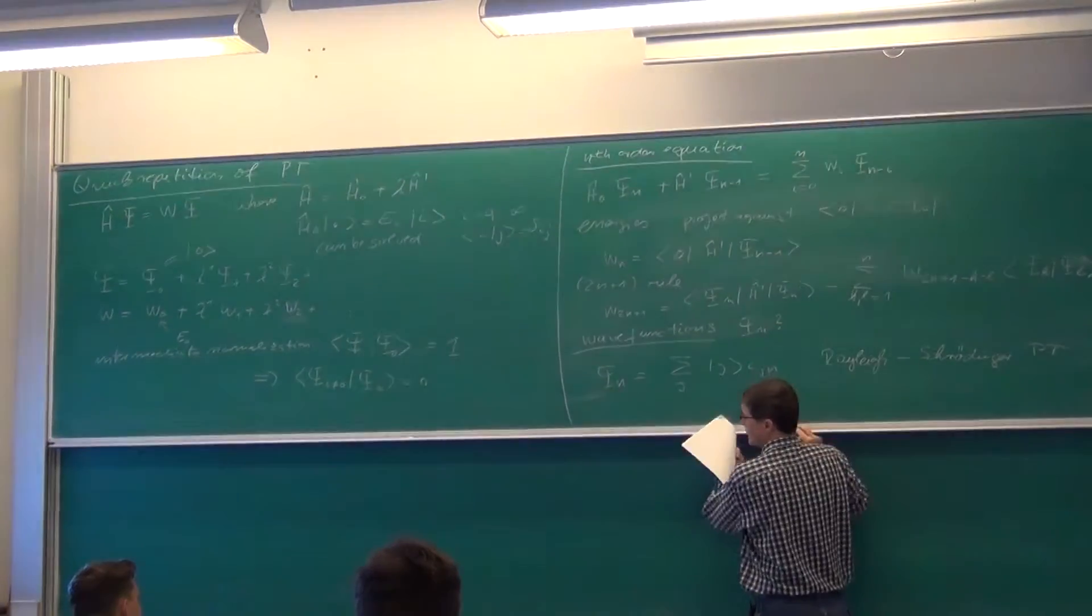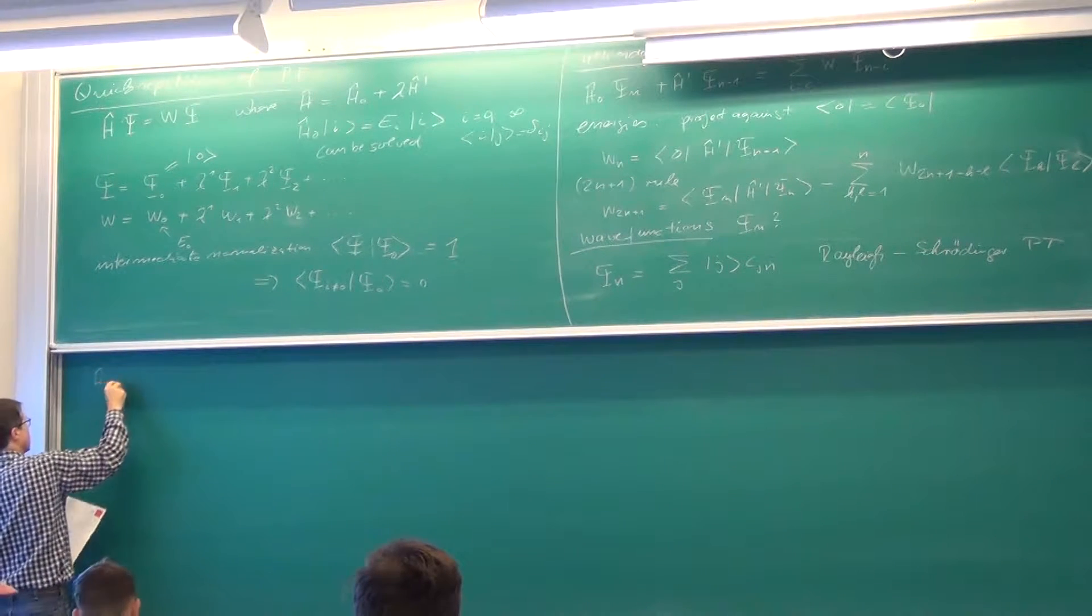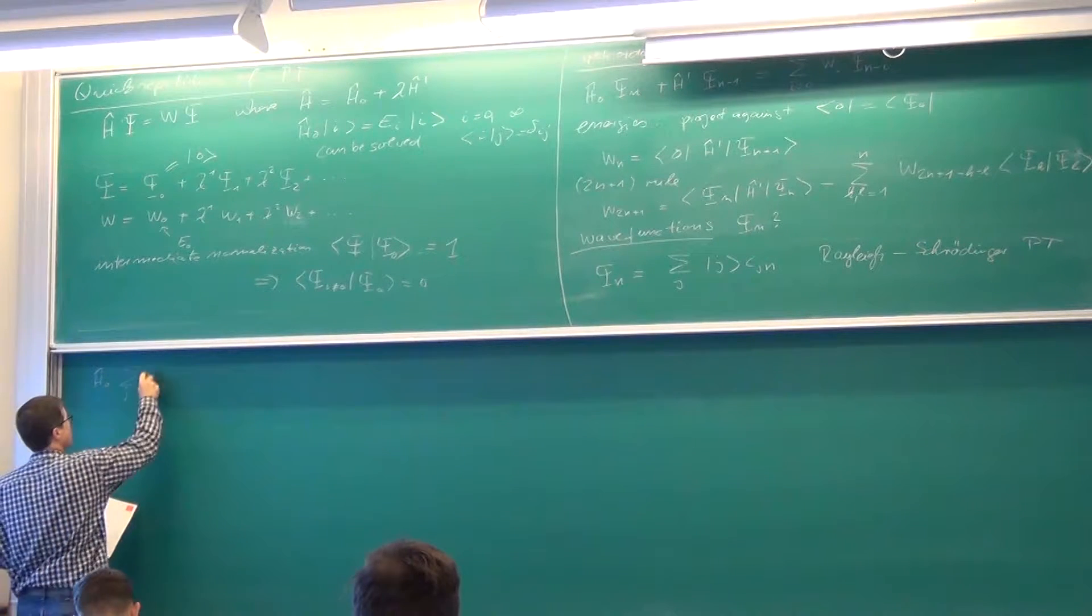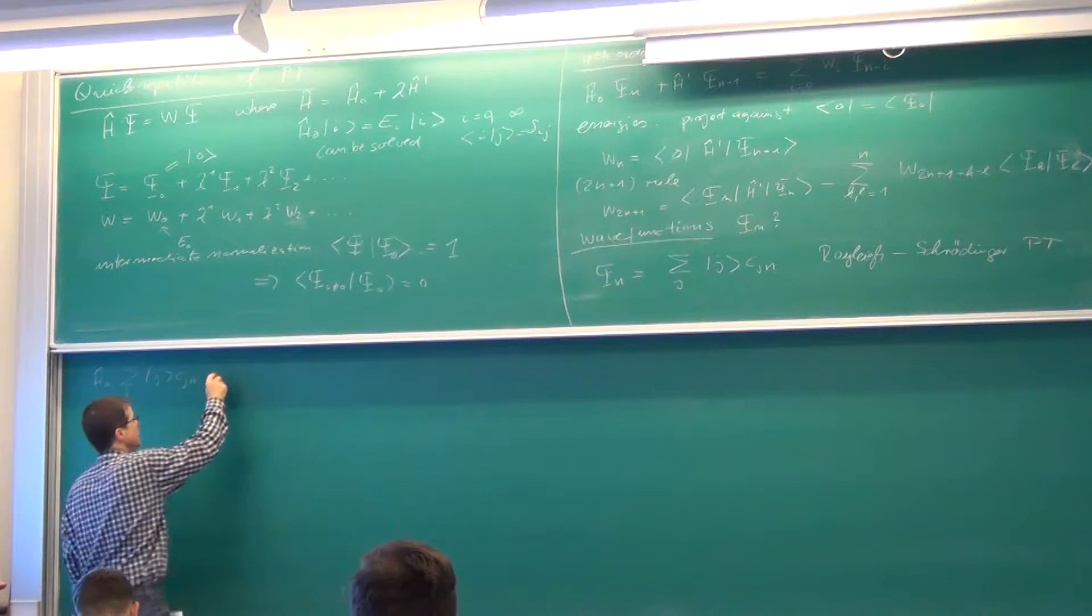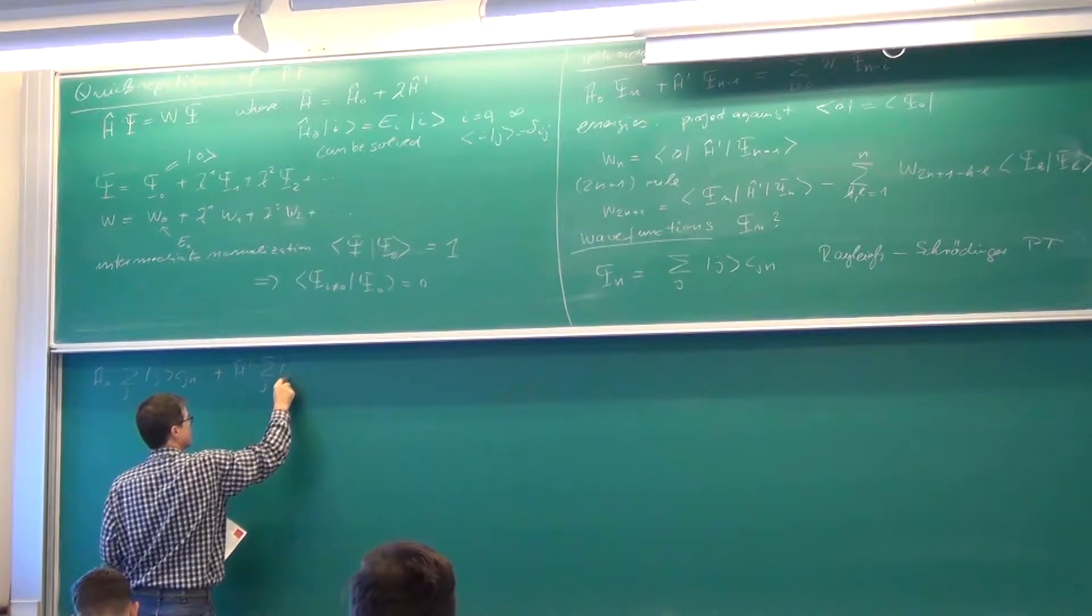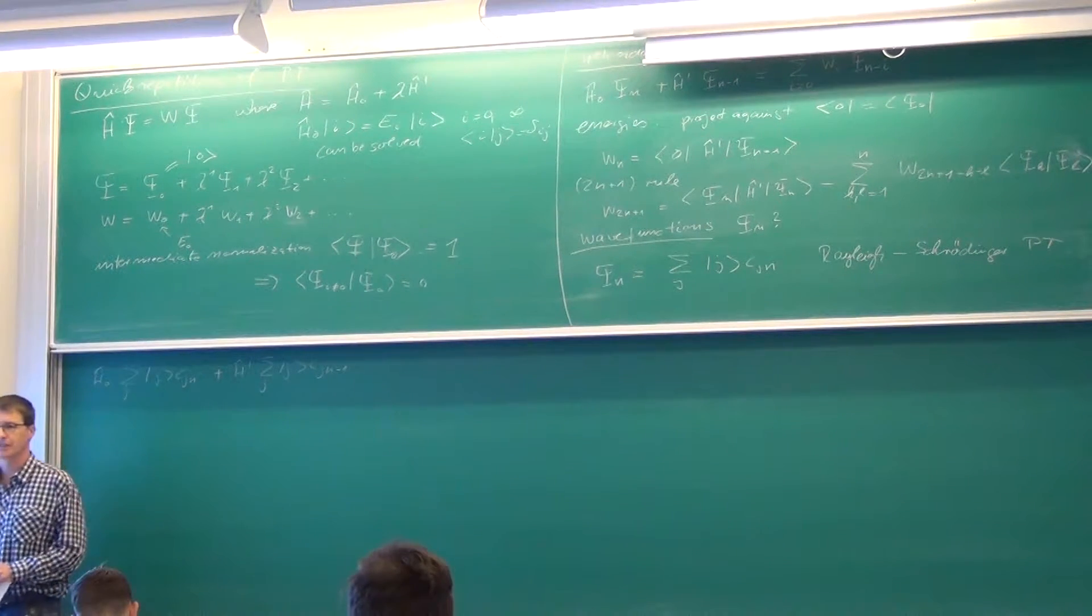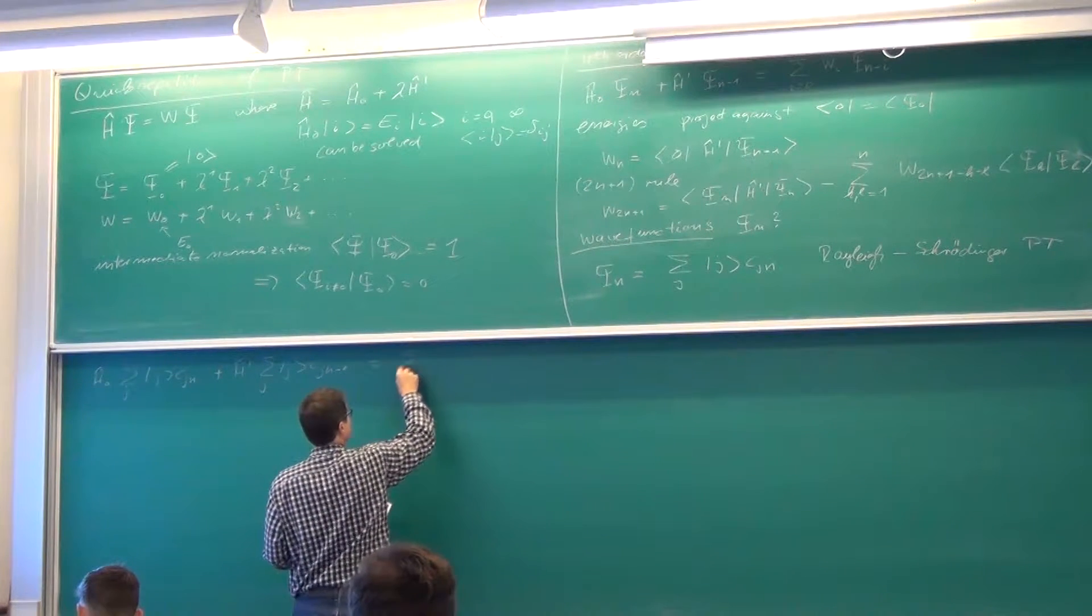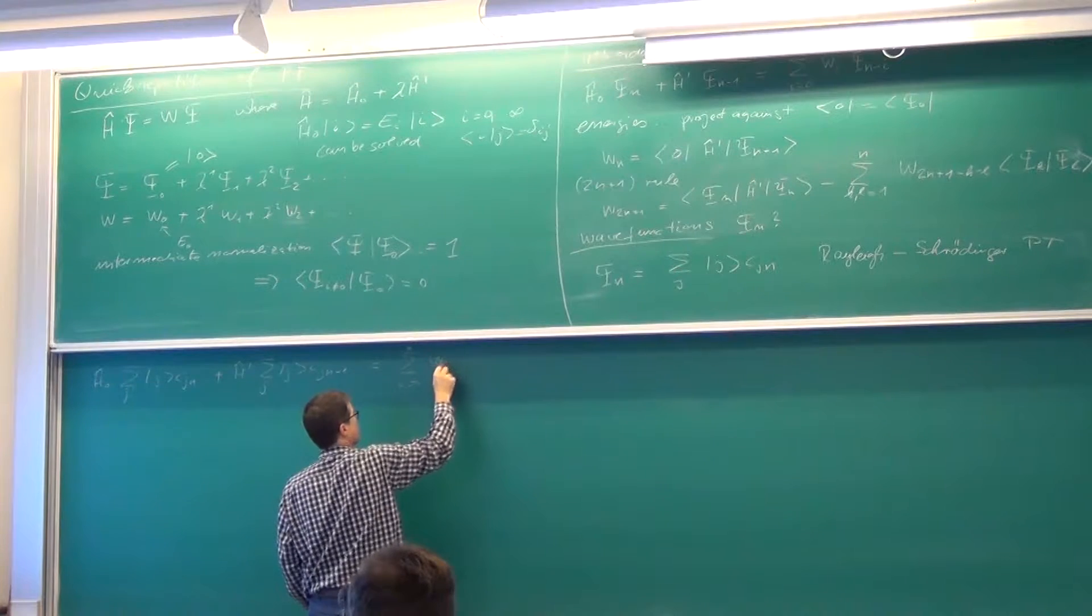I insert my wave function in the nth order equation, which then makes it to look like this, our zeroth order Hamiltonian. And now, I have a sum over these j states with their coefficients and that's the nth order wave function, so it's the nth order coefficient. Plus, same, almost same story with the perturbation Hamiltonian prime. Same expansion apart from now, now it's not the nth order coefficient, but it's the n minus first order coefficient. That's left hand side.